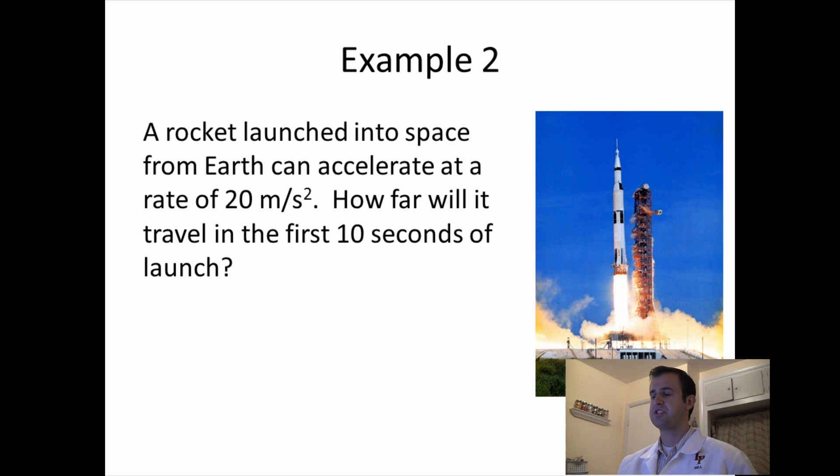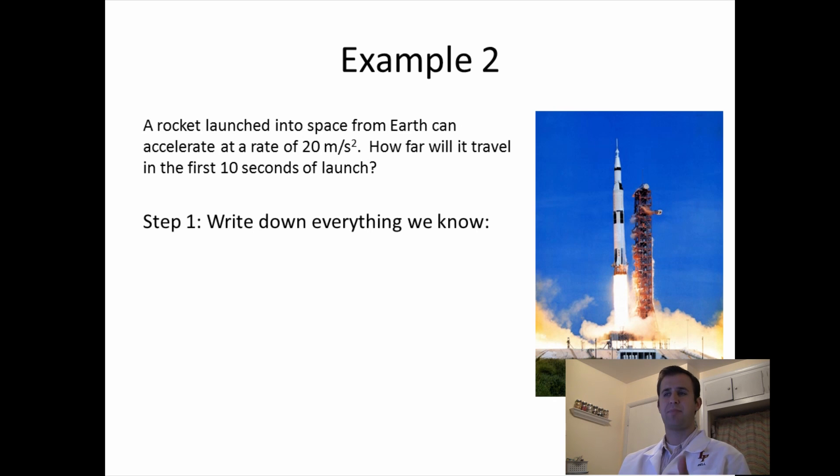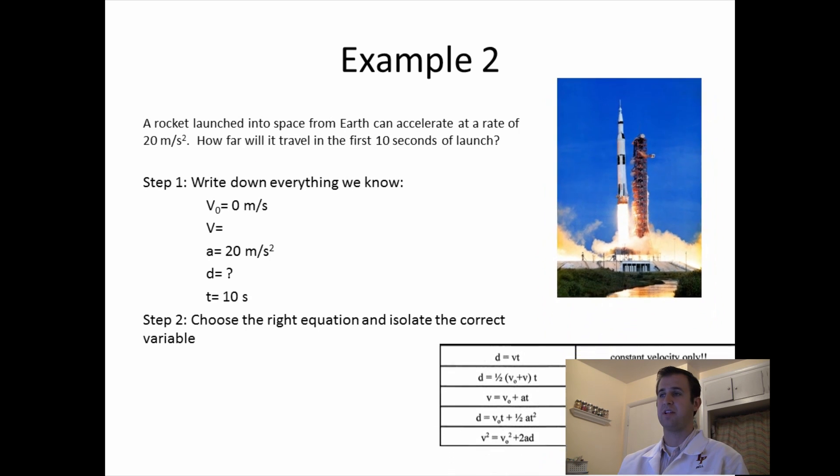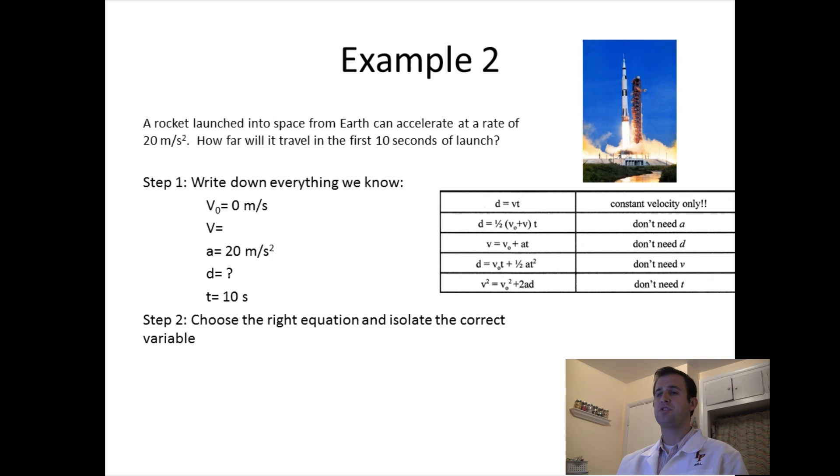In our second example, let's just say that a rocket that's launched into space can accelerate at 20 meters per second squared. Now I know that rockets can accelerate much more than that, but for this example, let's just say it's 20. And I want to know how far will it travel in the first 10 seconds of the launch, assuming it has a constant acceleration. Step one, we write down everything that we know. So v0, v, a, d, t. Our starting velocity is going to be 0, since a rocket on Earth is not moving before we launch it. Our acceleration is 20 meters per second squared. And then we want to know how far it's going to travel in the first 10 seconds, so we write down the 10 seconds.